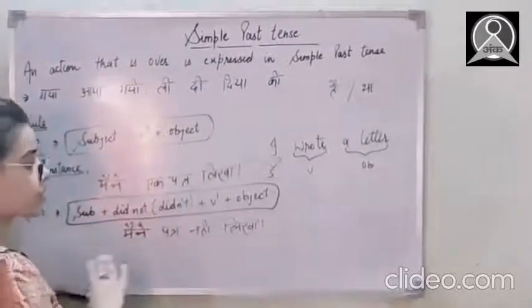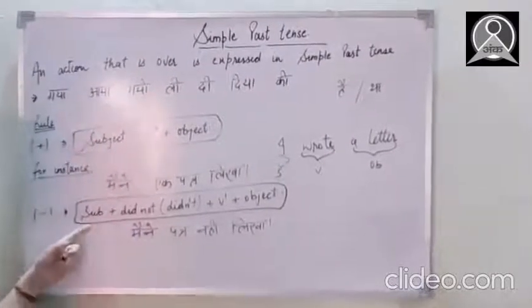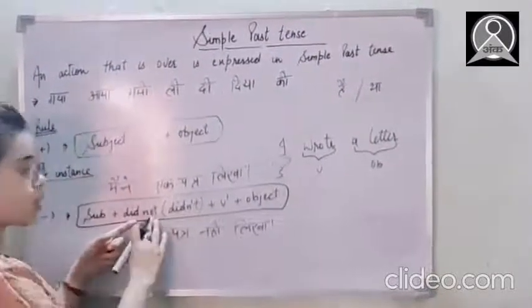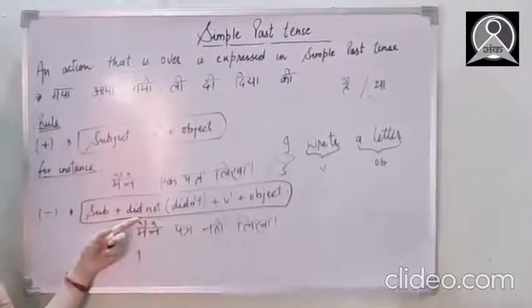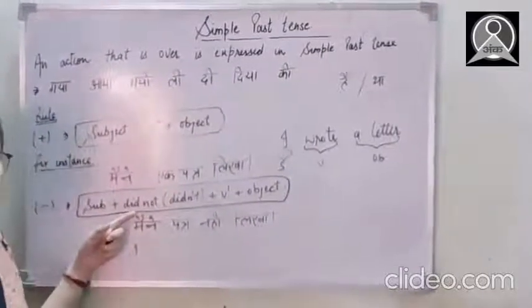Let's have an example here. Maine patr nahi likha. So firstly, the subject, I. Then didn't. We use didn't for every, every person. First, second, third, every person.